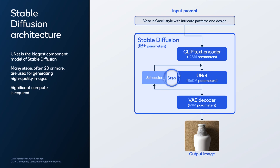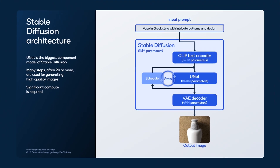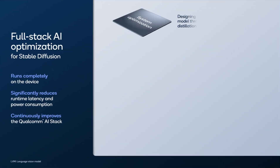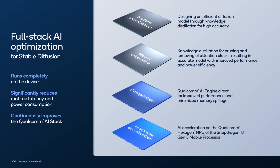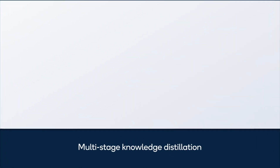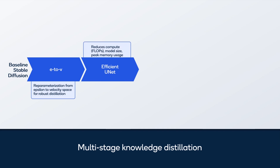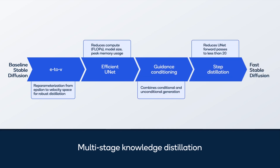Repeating the UNET processing is the compute bottleneck. Therefore, our full-stack AI optimizations through system optimization, model efficiency, compilation, and hardware acceleration focus on reducing the overall computations needed in the denoising process to achieve high-quality image generation at low power and low latency. With our multi-stage knowledge distillation approach, we define an efficient UNET architecture and develop both guidance conditioning and step distillation.